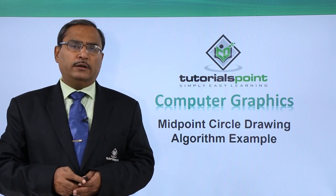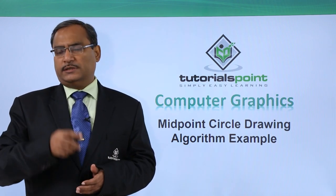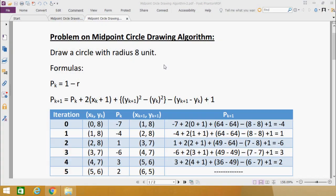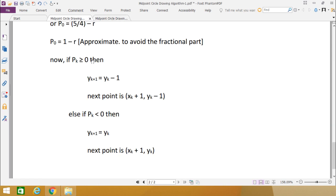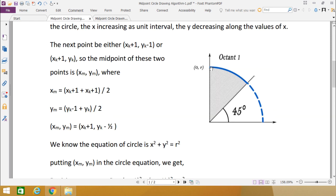In this video we are going to explain one Midpoint Circle Drawing Algorithm example. We shall see how the algorithm can be implemented. The problem is: draw a circle with radius 8 units. The radius is 8 units, so this particular point has the coordinate x = 0 and y = 8, which is the first point we are going to have.